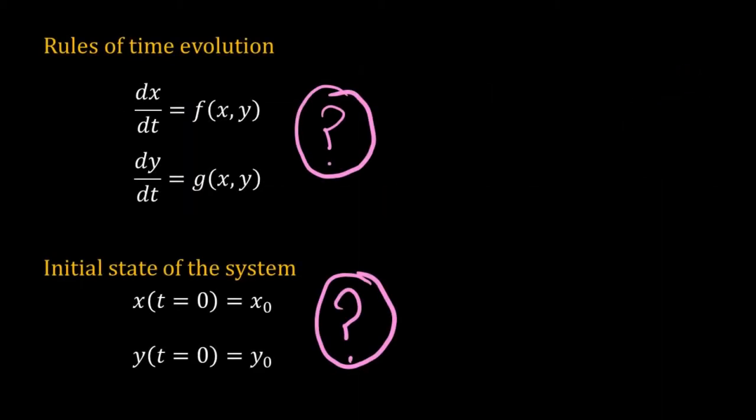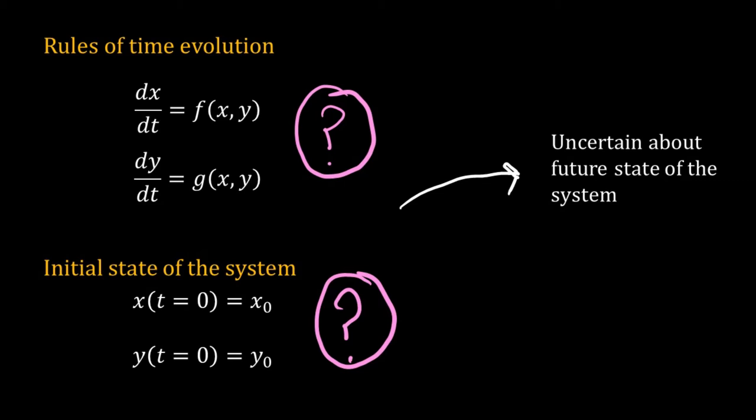But what if either we do not know all the rules of the system, or the initial state, or both? Then we will have uncertainty about the future state of the system. We will not be able to predict the future state of the system exactly. We will call these type of systems or processes as stochastic systems or stochastic processes.